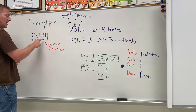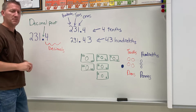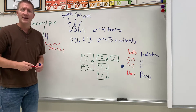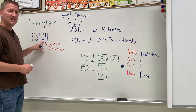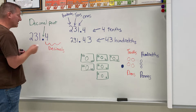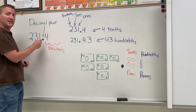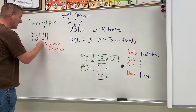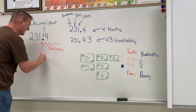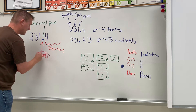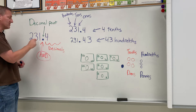So first of all, the decimal point — when you see it in a number, you're gonna call it 'and.' You're not gonna say 'point,' you're not gonna call it a dot or anything else. You're gonna actually say 'and.' So whenever you see a decimal point, you'll say 'and.'